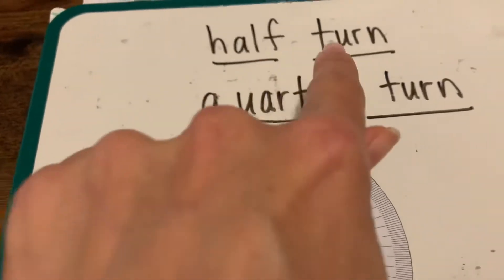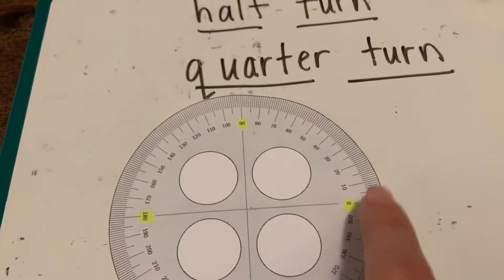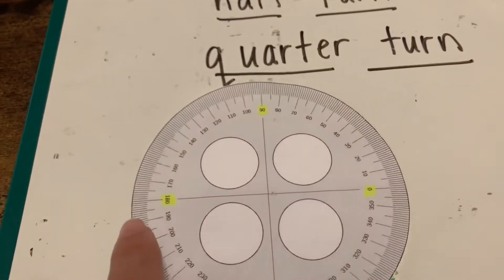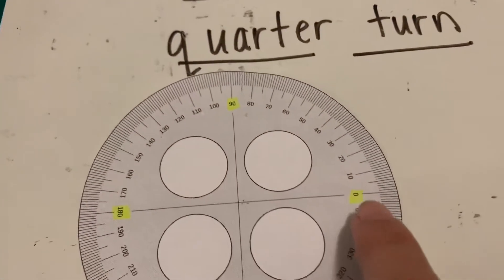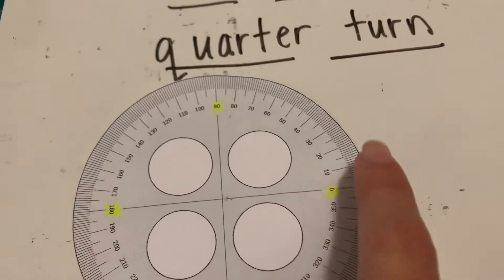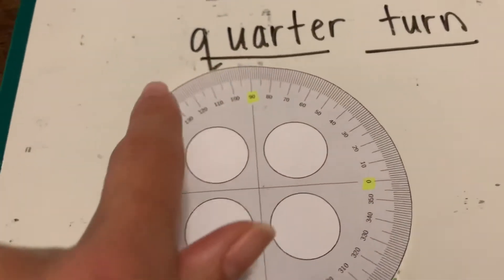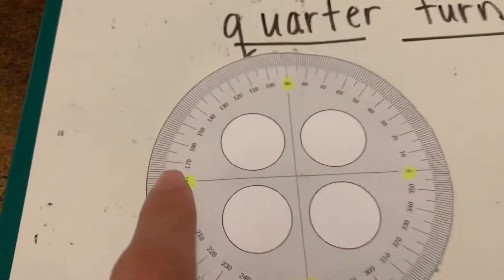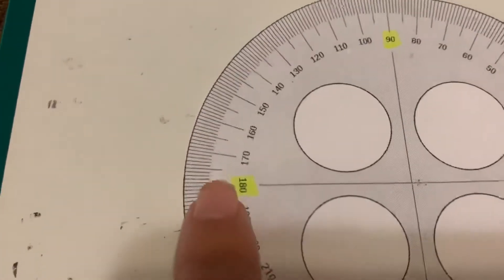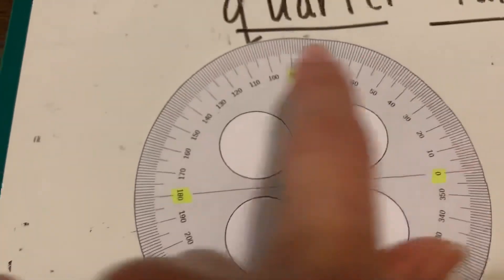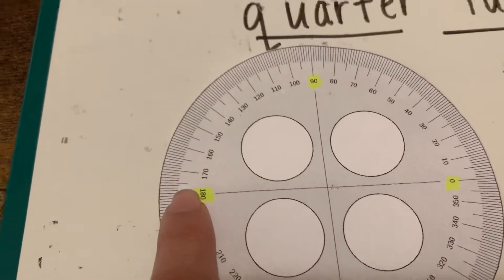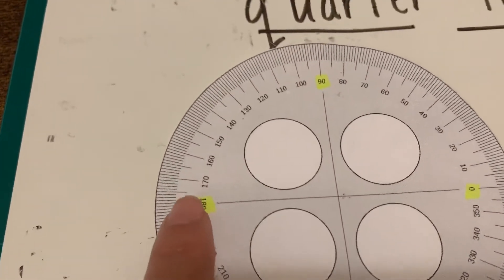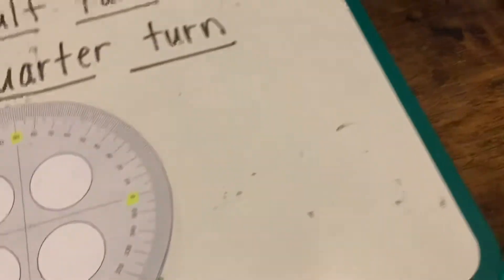A quarter turn is 90 degrees. A half turn would be just half of the circle, so a half turn of the protractor would be 180 degrees because I'm going halfway around — half of the circle, not the full 360.